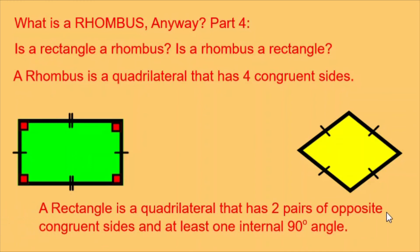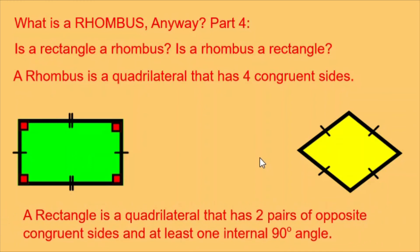Is a rhombus also a rectangle? The definition of a rectangle is a quadrilateral with two pairs of opposite congruent sides and at least one internal 90-degree angle. A rhombus has four congruent sides, satisfying the first part, but does not necessarily have the internal 90-degree angle. So this rhombus is not a rectangle. But can a rhombus be a rectangle? Yes — because squares are rhombuses, and squares satisfy all parts of the rectangle rule, those rhombuses that are also squares are also rectangles. To sum up: is a rectangle a rhombus? Not necessarily, but it can be. Is a rhombus a rectangle? Not necessarily, but it can be.